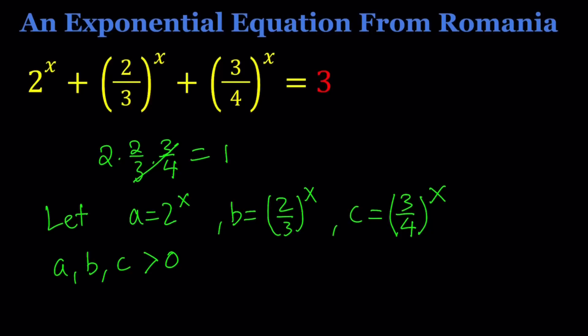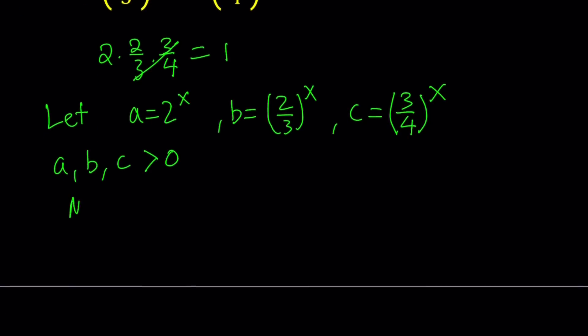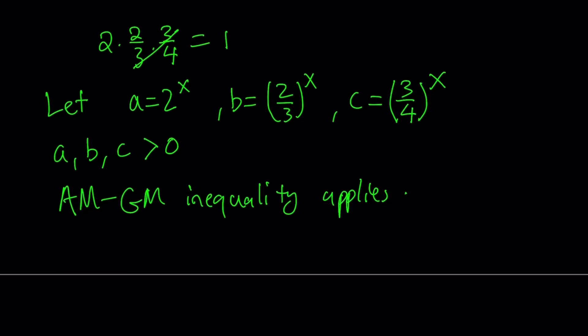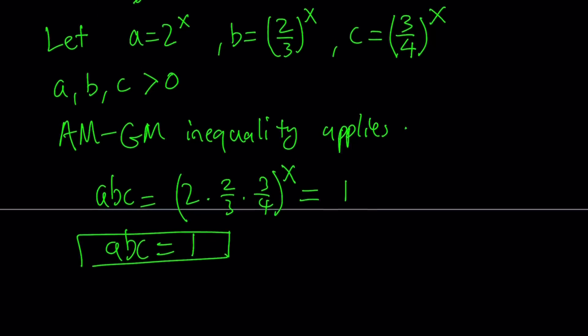And since a, b, c are all positive then we can basically apply what is called the AM-GM inequality. Now also notice that if you multiply a, b, c together you're going to get 2 times 2 thirds times 3 fourths to the power x which is equal to 1 to the power x which is equal to 1. So we have the product a, b, c equal to 1 and a, b, c are all positive therefore we can use AM-GM inequality.